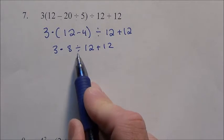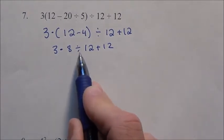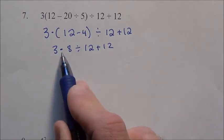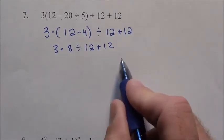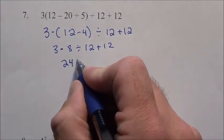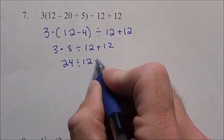We're down to multiply, divide, add. These are both of the same power, so we're going to do whichever one came first, which in this case is the multiplication. Order from left to right. 3 times 8 is 24 divided by 12 plus 12.